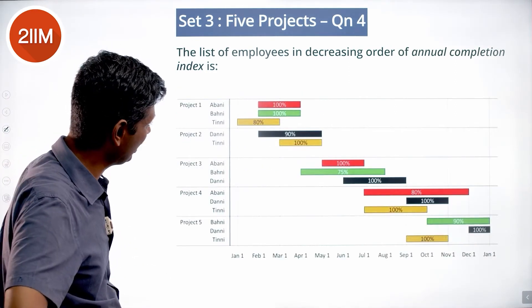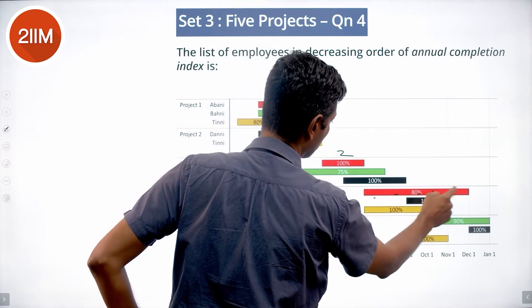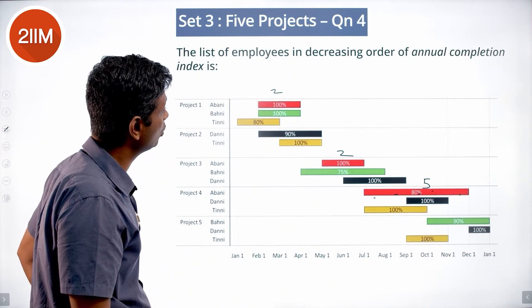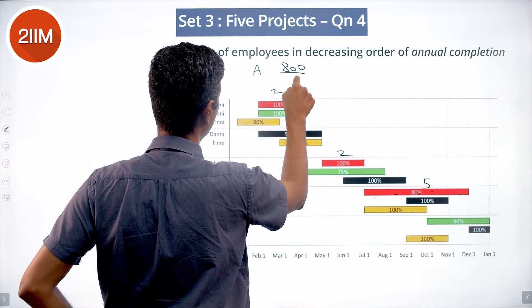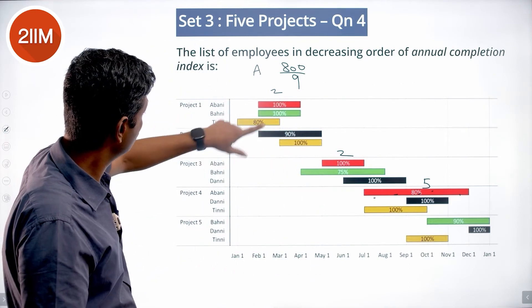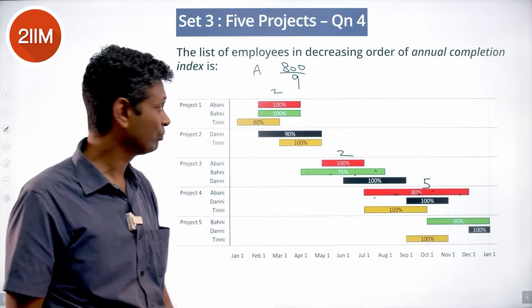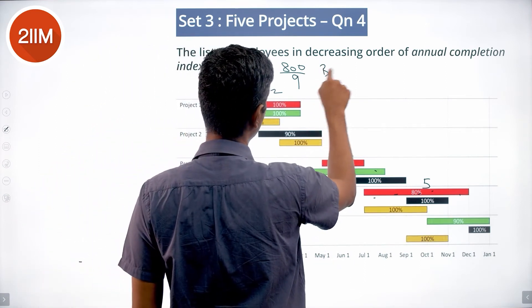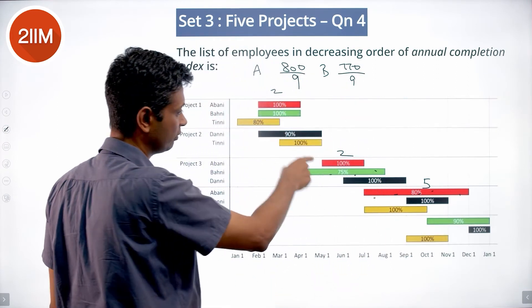List the employees in decreasing order of annual completion index. Abani: 2 × 100% + 5 × 80% = 200 + 400 = 800/9. Since each employee worked 9 months, that's super useful. Bhani: 2 × 100% + 4 × 75% = 200 + 300 = 500, plus 270 = 770/9.